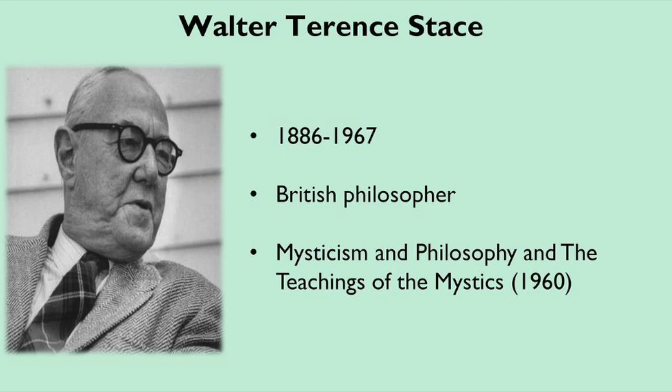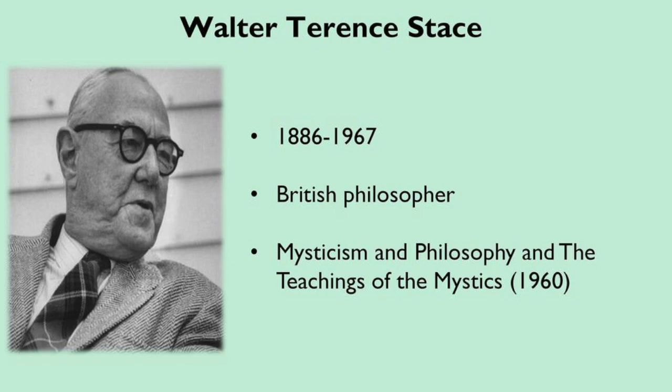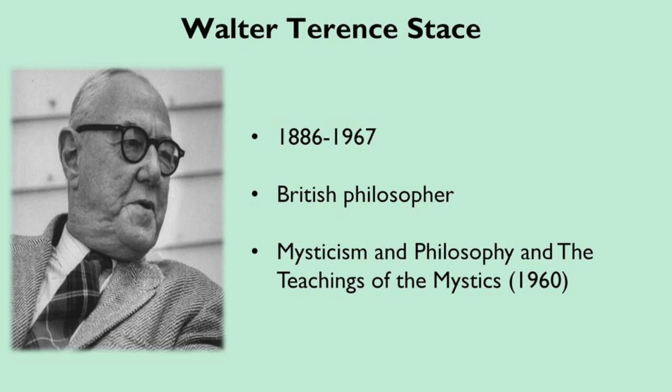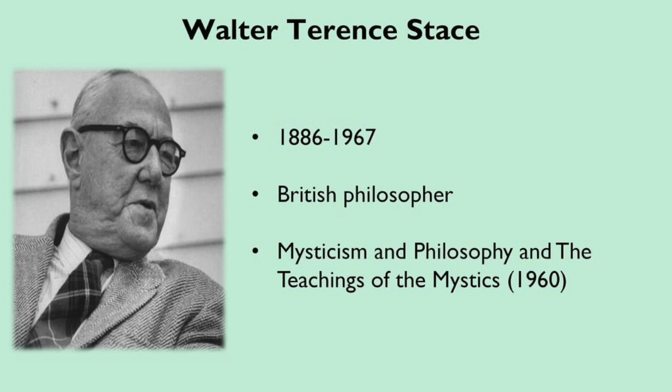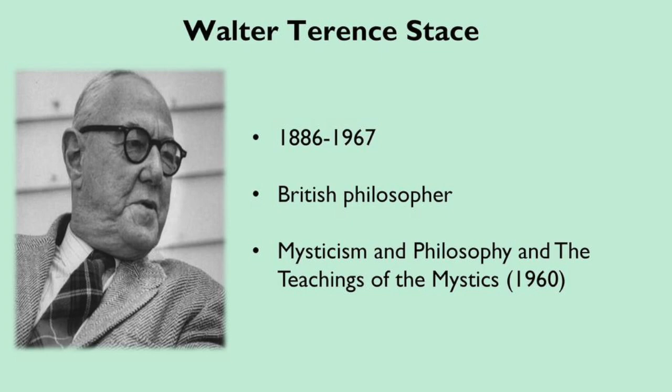According to Stace, there are two kinds of human actions — what he rather arbitrarily identifies as free and unfree. This is very Hegelian — thesis and antithesis. Free actions are those caused by desires, motives, and psychological states of mind, which he references as internal processes. Unfree actions are those resulting from physical forces and physical conditions external to the agent.